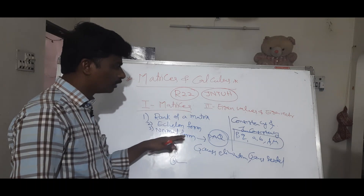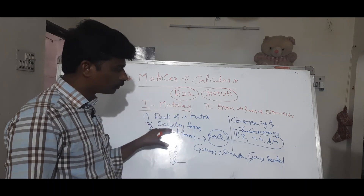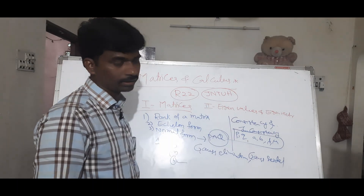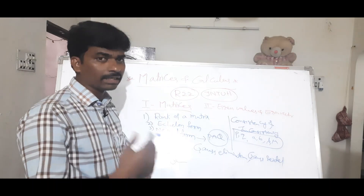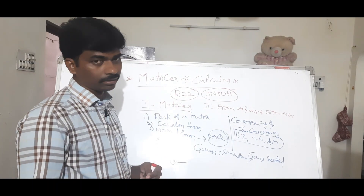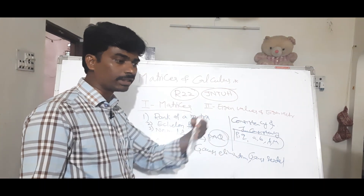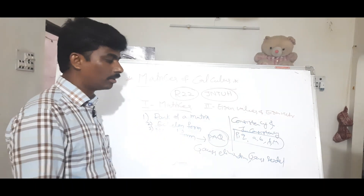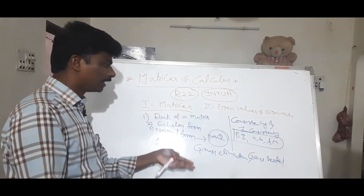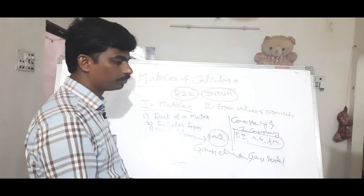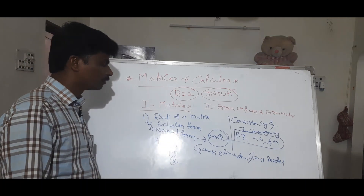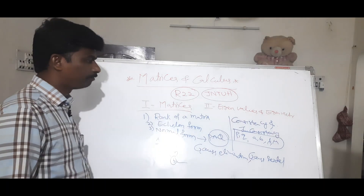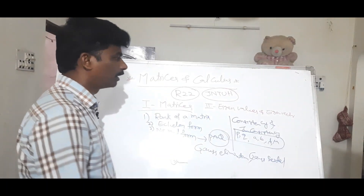Overall, in the first unit, the main topics are: rank of a matrix, echelon form, normal form, PAQ, consistency and inconsistency, Gauss elimination, and Gauss-Seidel. In Gauss-Seidel, we use elementary transformations — elementary row operations and elementary column operations. We will also choose definitions and procedures, as well as symmetric matrices.